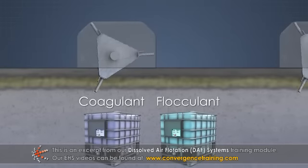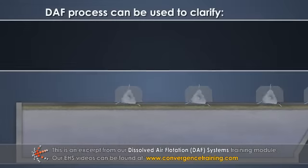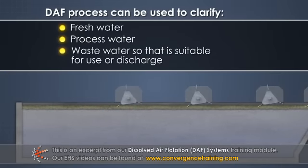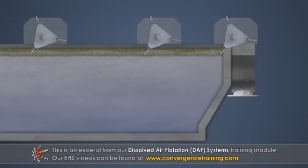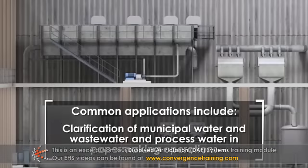Chemicals can be added to the feed water to improve solids removal. The DAF process can be used to clarify fresh water, process water, and waste water so that it is suitable for use or discharge. In some cases, the solids are collected for reuse. Common applications include clarification of municipal water and waste water, and process water in papermaking operations.